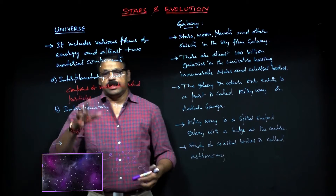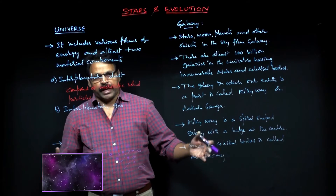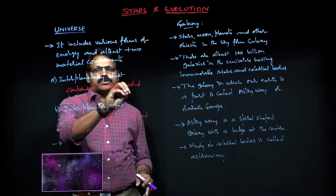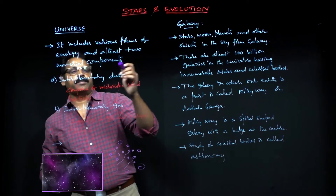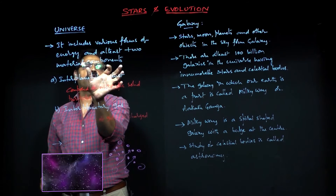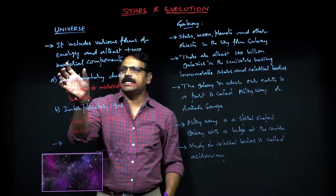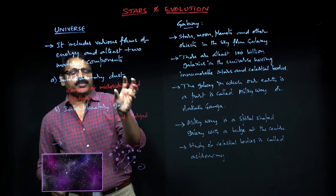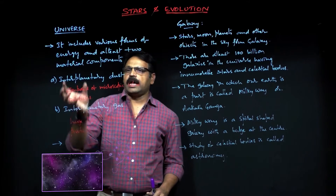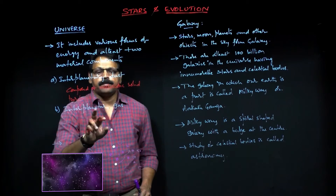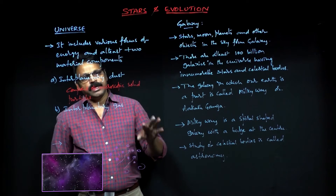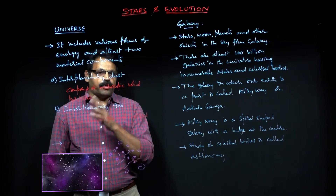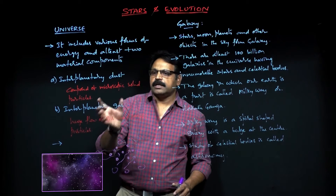Between successive planets, or between all the planets, whatever space is there is filled by microscopic solid particles called interplanetary dust. That is one materialistic component. The second material component is interplanetary gas. Gas is also matter — matter can be in three forms: solid, liquid, and gas — and gas is one form of matter.